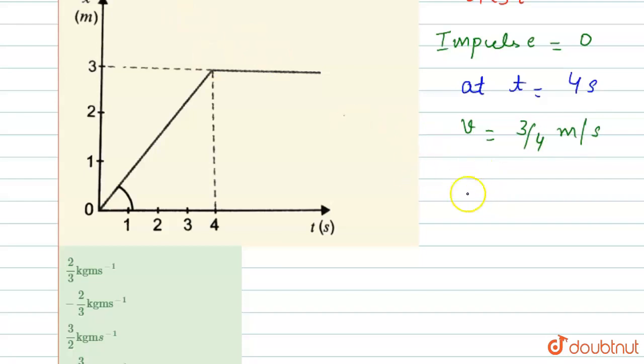Now we easily find impulse. Impulse is equals to change in momentum, like final momentum minus initial momentum.